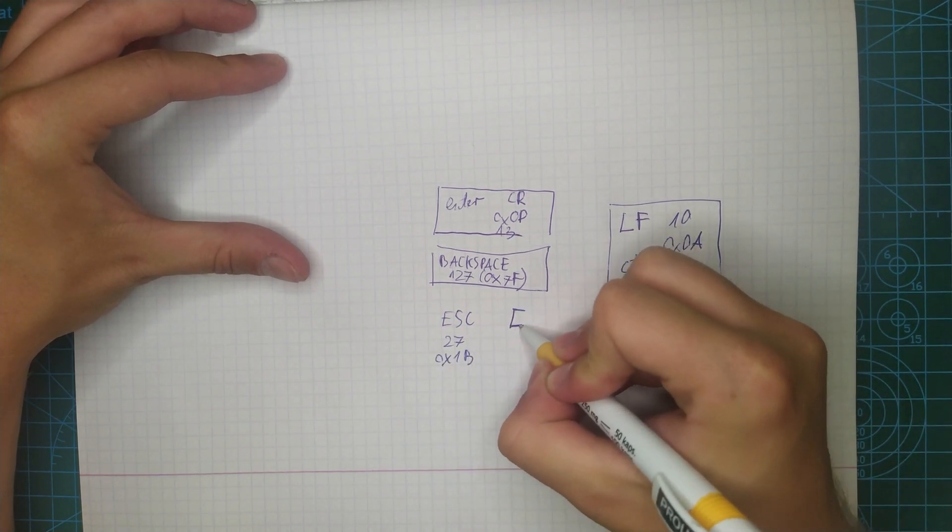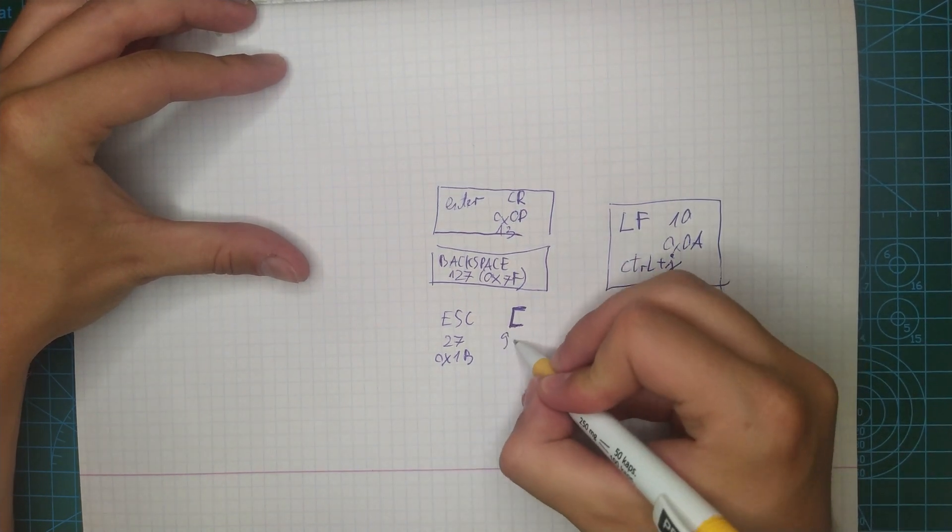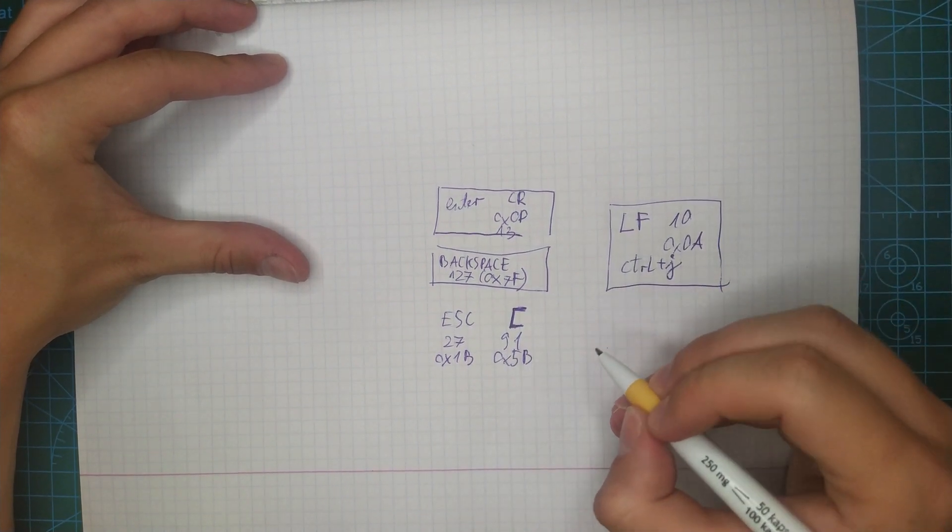Then, open square bracket. It is 91, 0x5B. And then, A, B, C or D.